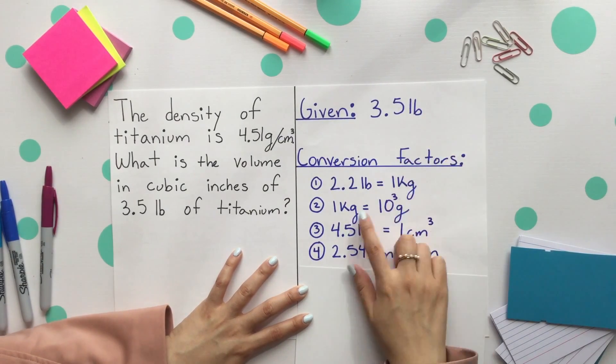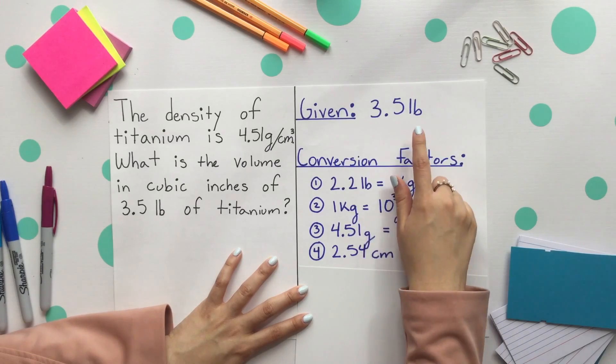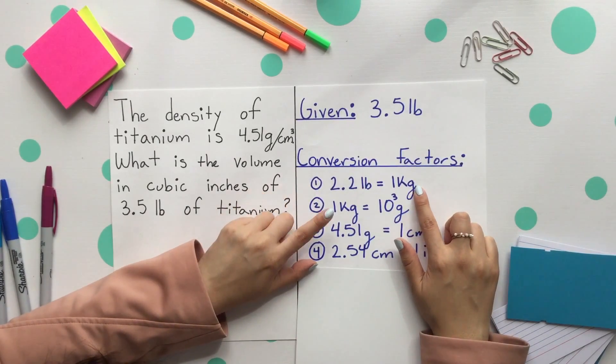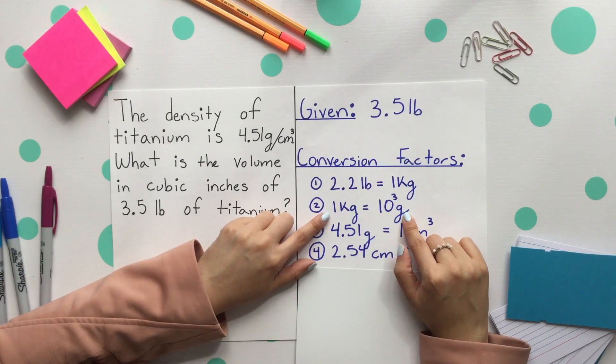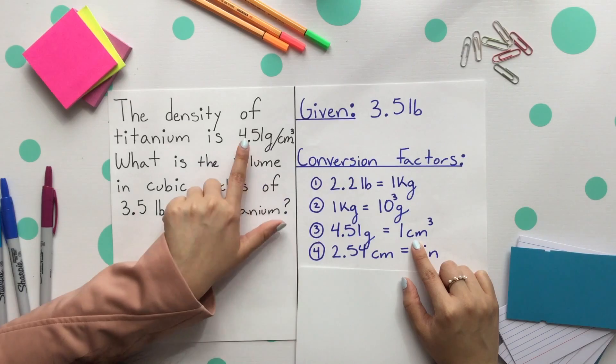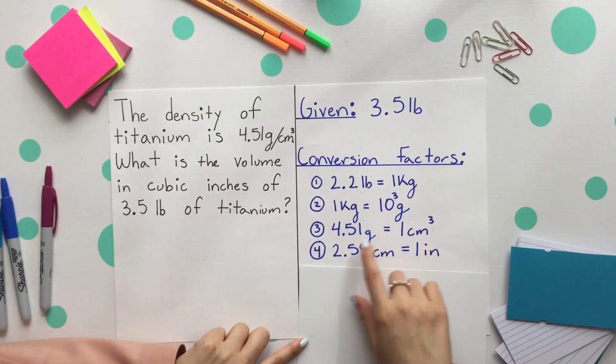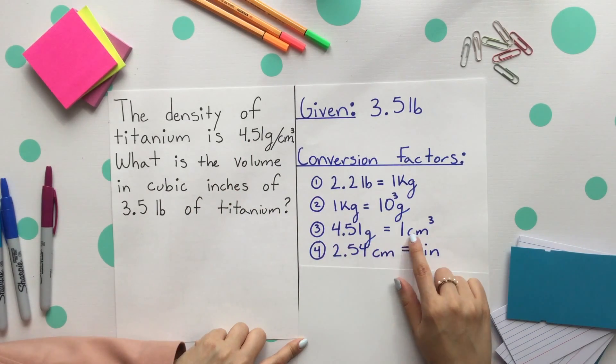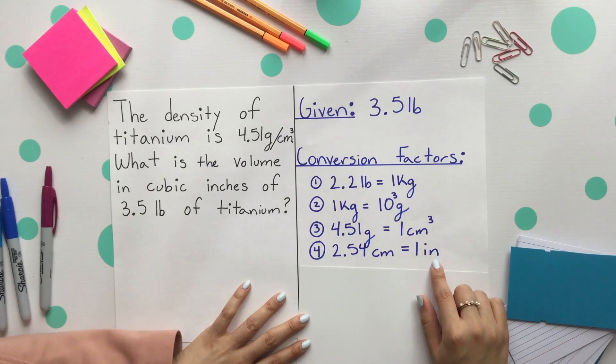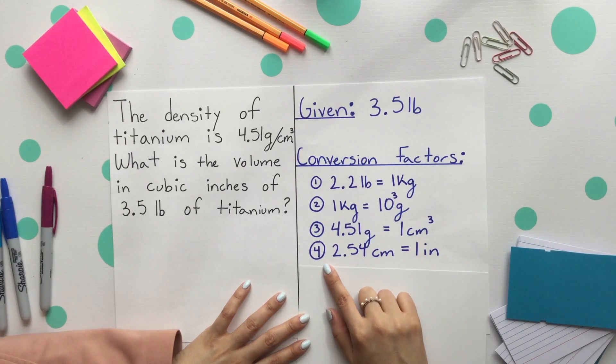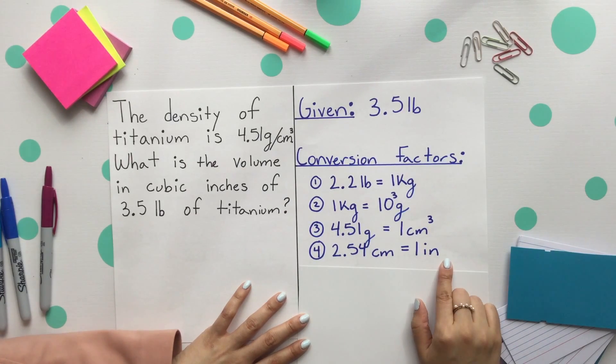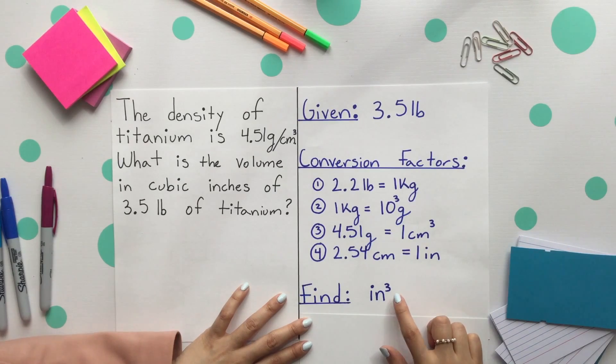To get from pounds to eventually grams, we'll go from pounds to kilograms. Next, we'll use kilograms to get to grams using the metric system. Our third conversion factor is the density which was provided, which is 4.51 grams for every one cubic centimeter. Next, we want to get to inches, so we'll use our last conversion factor, 2.54 centimeters to get to one inch, and we are solving for inches cubed.